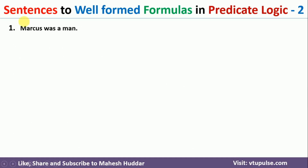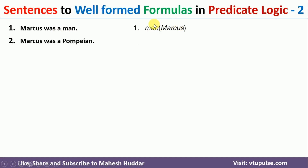The first fact is: Marcus was a man. This is a very straightforward fact. It can be represented as Man(Marcus) — that is, Marcus is a man. The second fact is: Marcus was a Pompeian. This can be represented as Pompeian(Marcus) — that is how you represent it in the form of a logical statement.